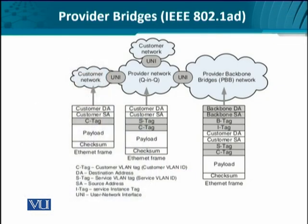Let's look at the figure. Here we see multiple customer networks connected to the provider network through a user-to-network interface. For intra-customer network traffic, we have the source and destination MAC addresses and the VLAN ID, known as the customer VLAN tag. But when that traffic enters into the provider network, a specific S-tag is associated, as you can see here. This is the only addition we see once provider bridges are used to relay traffic between customer networks connected to each other via a provider network.